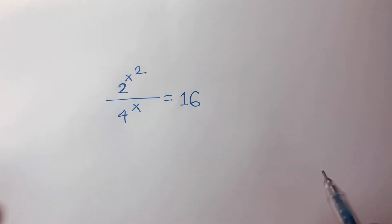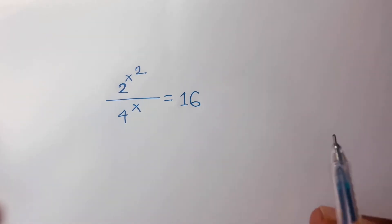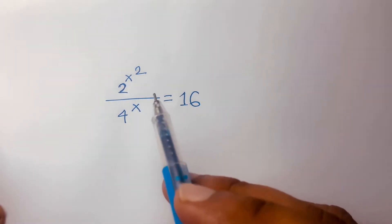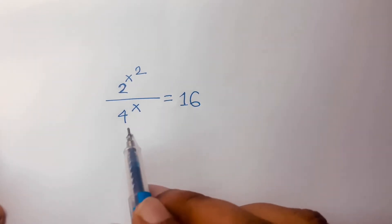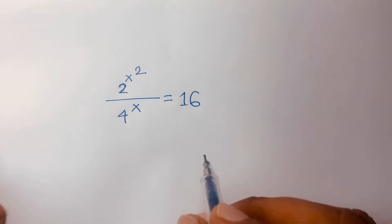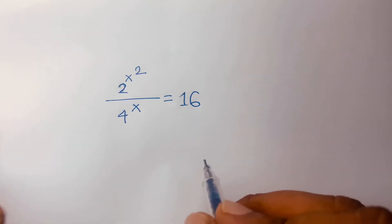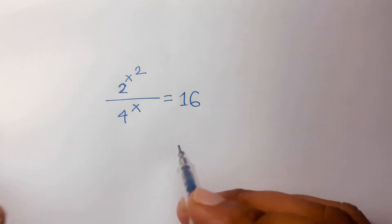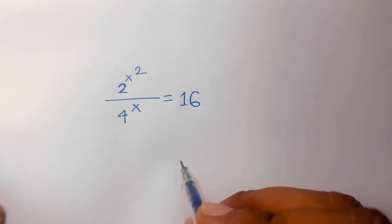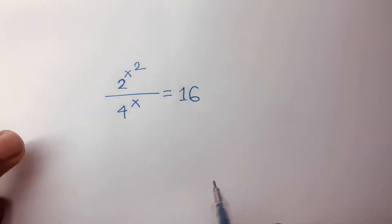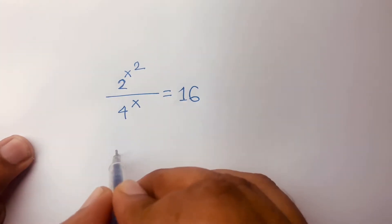How to solve this exponential equation: 2 to the power x squared over 4 to the power x is equal to 16. We'll find out what is the value of x in this math question.